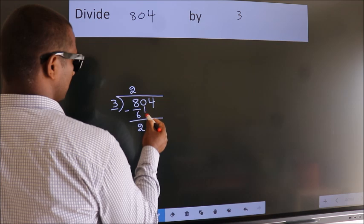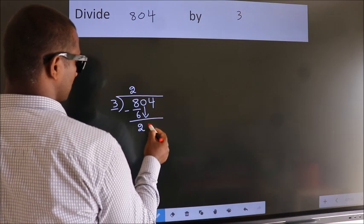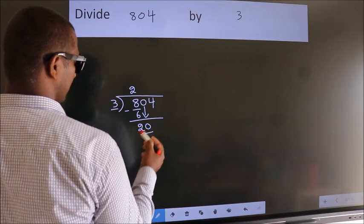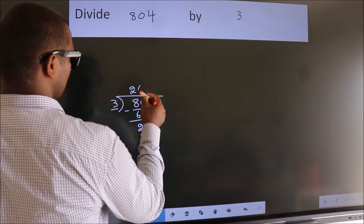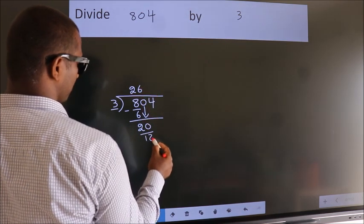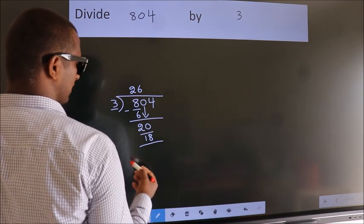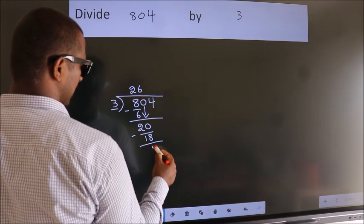After this, bring down the beside number. So 0 down, making 20. A number close to 20 in the 3 table is 3 times 6, which is 18. Now we subtract. We get 2.